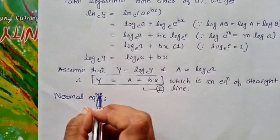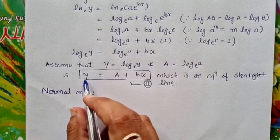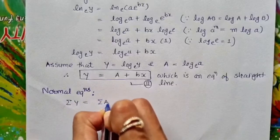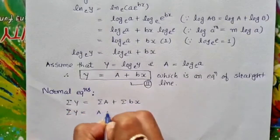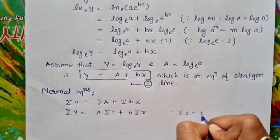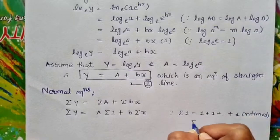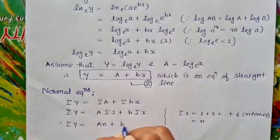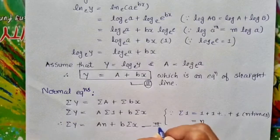Now we form the normal equations related to equation number 2. To form the normal equations, we first take summation of both sides of equation 2. Therefore we get summation Y = nA + b·summation x. This is our normal equation, considered as equation number 3.